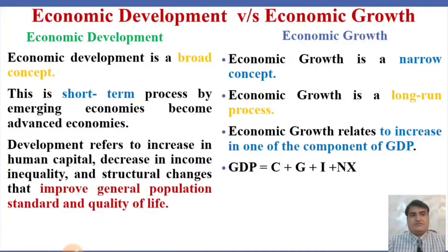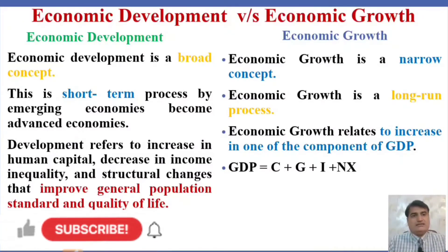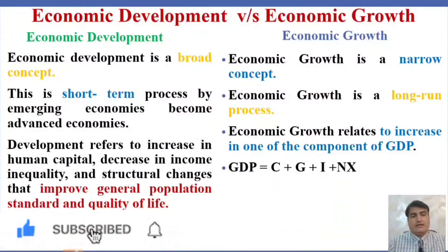In the GDP lecture, we learned that the equation of GDP is C plus G plus I plus NX, where C stands for public and private consumption, G stands for government expenditure, I stands for investment, and NX means net exports. So economic growth relates to an increase in one of the components of GDP — either increase in consumption, increase in government spending, increase in investment, or increase in exports.